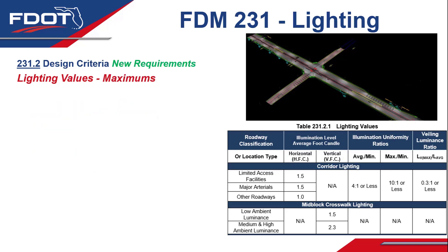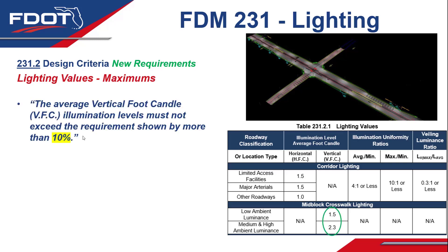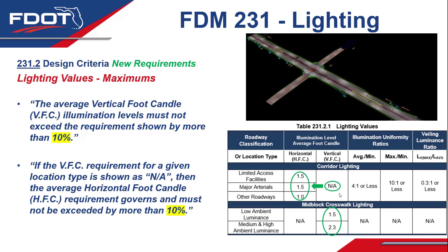In order to make that general idea more objective, we've added maximums to the lighting values. The average vertical foot candle illumination levels must not exceed the requirement shown by more than 10%. The vertical foot candle tends to govern, particularly at intersections. When the vertical foot candle requirement is given as NA, then the average horizontal foot candle requirement governs and must not be exceeded by more than 10%. This 10% limitation is considered reasonable and objectively helps keep brightness levels from becoming excessive.